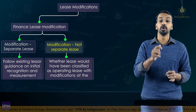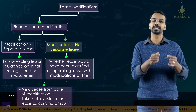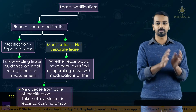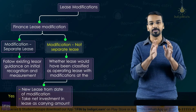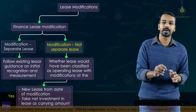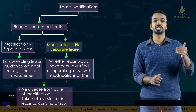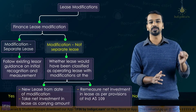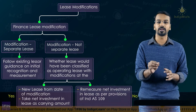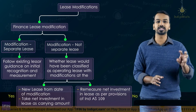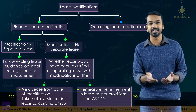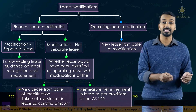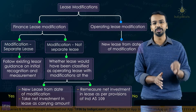If applying the revised terms and conditions since inception would have resulted in an operating lease classification, then you de-recognize the net investment in lease and recognize the underlying asset at the carrying amount of the net investment in lease — the asset comes back into the books. That applies when a finance lease is modified into an operating lease. But if the finance lease after modification continues to remain a finance lease, you re-measure the net investment in lease by applying the principles under IFRS 9. If it is a modification of an operating lease, the modified lease is treated as a new lease and accounted for accordingly.